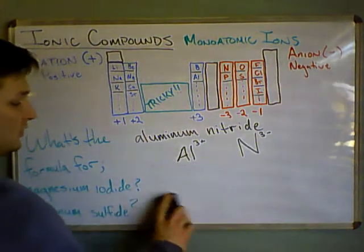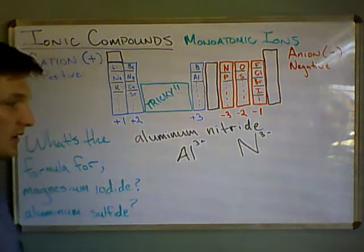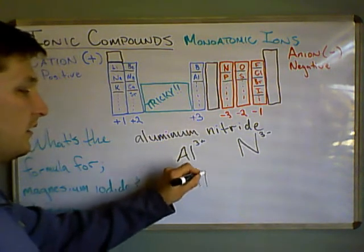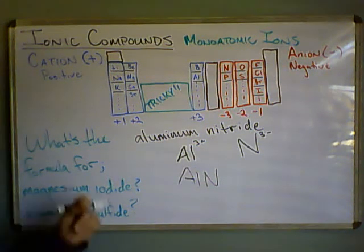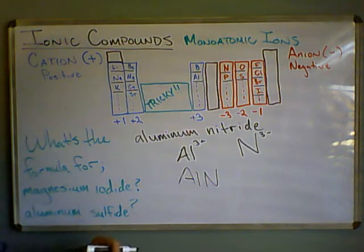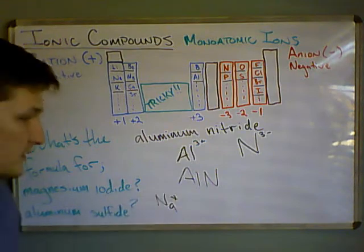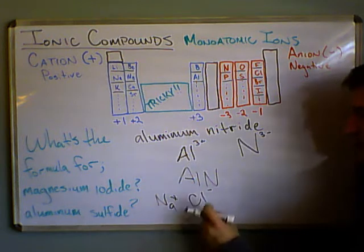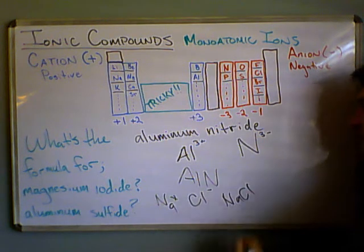So when you have like charges, right? If they're 3 plus and 3 minus, well, then it's just 1 to 1. So you have AlN, and that's the formula for aluminum nitride. And that works the same way with sodium chloride. Sodium was Na plus, chloride was Cl minus. Again, 1 to 1, NaCl.